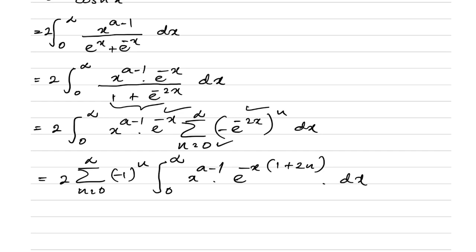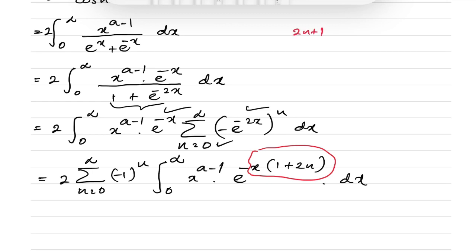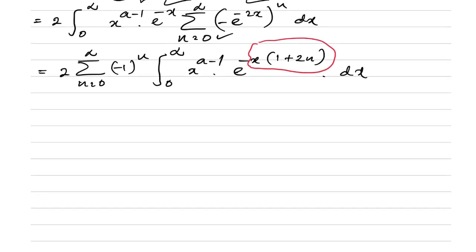To evaluate this integral, we use the substitution u = (2n+1)x, so that (2n+1) dx = du. Plugging in, we get 2 times the sum from n=0 to infinity of (-1)^n, with the integral from 0 to infinity.